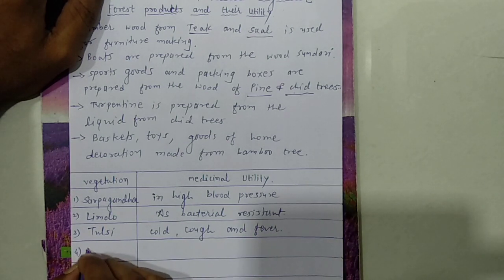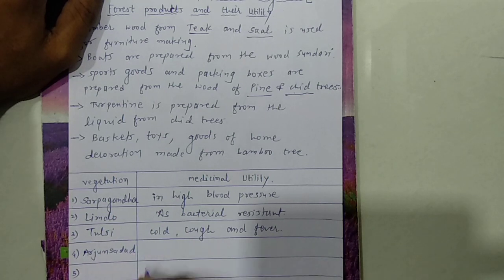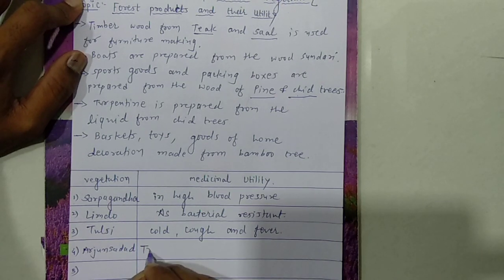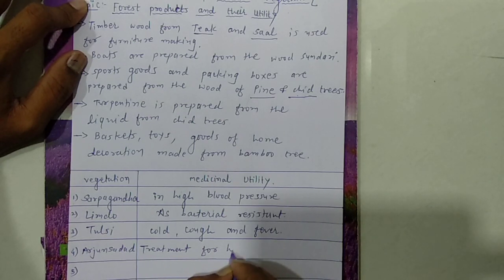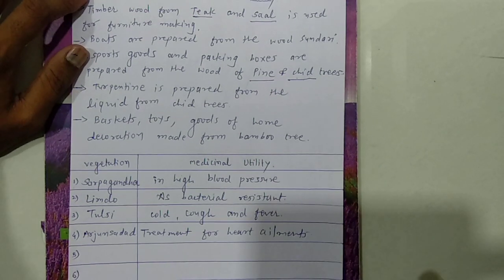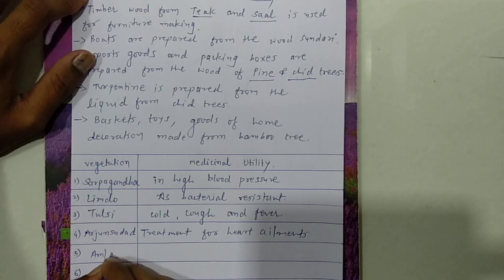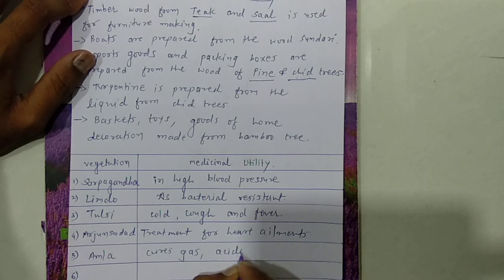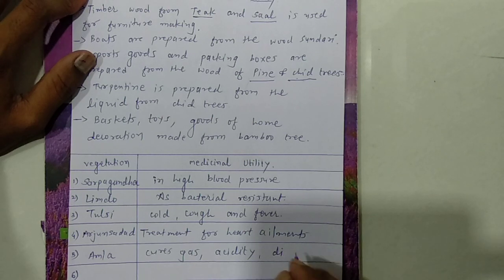Next is arjun. Arjun sarpagandha is used for the treatment of heart ailments, meaning medicines for heart disease are prepared from arjun sarpagandha. The next one is amla. Amla is used to cure gas, acidity, and to support our digestive system.